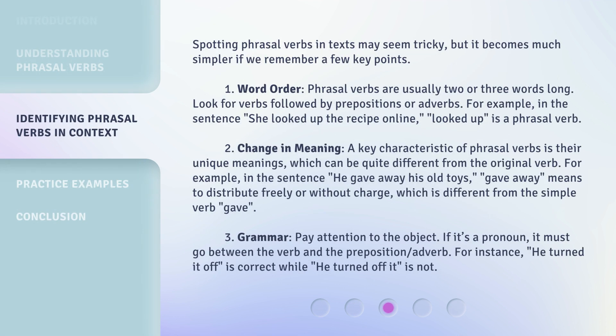Spotting phrasal verbs in texts may seem tricky, but it becomes much simpler if we remember a few key points. Number one: word order. Phrasal verbs are usually two or three words long — look for verbs followed by prepositions or adverbs. For example, in the sentence 'she looked up the recipe online,' 'looked up' is a phrasal verb.